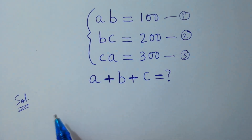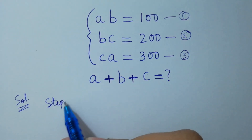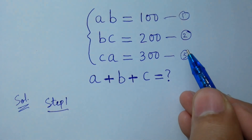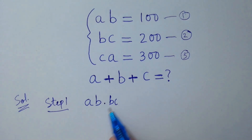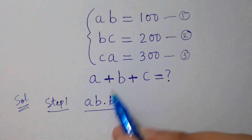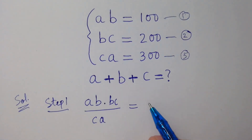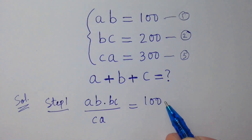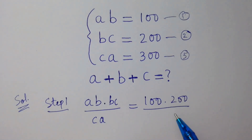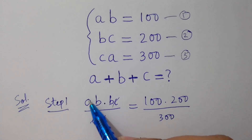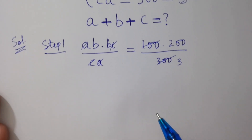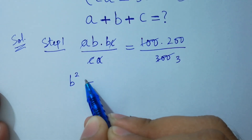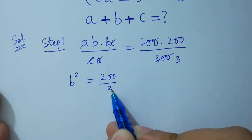Solve it now. The first step is to multiply the first equation by the second equation — ab times bc — divided by the third equation ca. This equals 100 times 200 over 300. Here c and c cancel, a and a cancel. We get b squared equals 200 over 3.